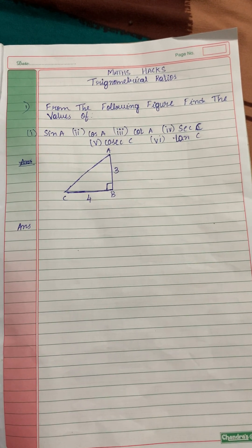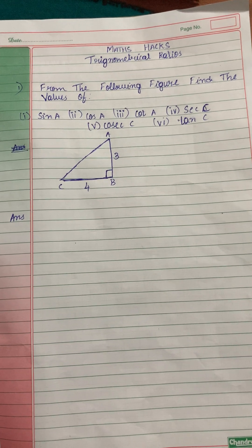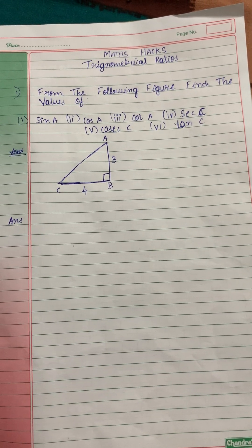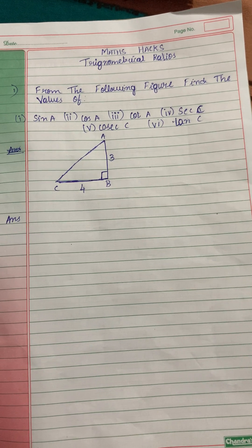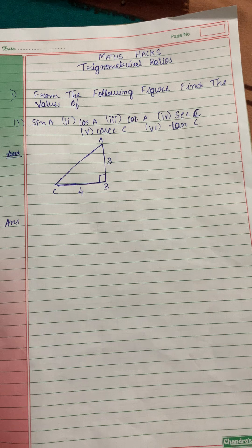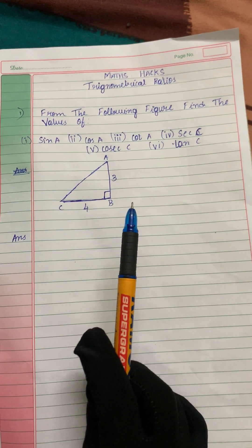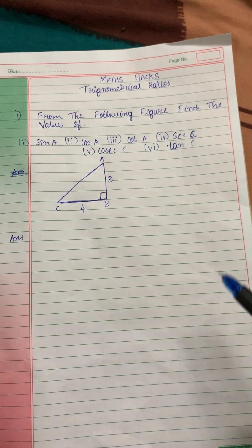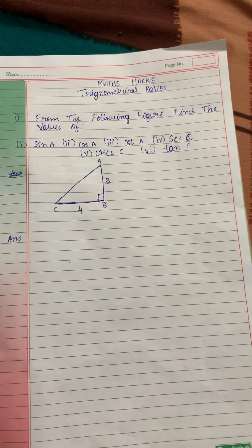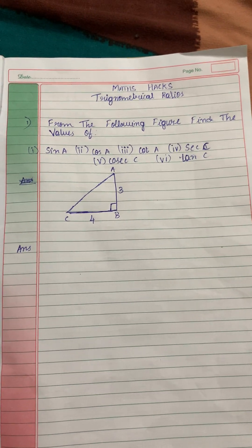Hi viewers, I hope you all are doing fine. Today we will solve sums related to the topic trigonometry. So what is trigonometry? The word trigonometry means measurement of triangles. The six trigonometrical ratios are sin, cos, cot, sec, cosec and tan. So let's solve the first question of trigonometrical ratios.